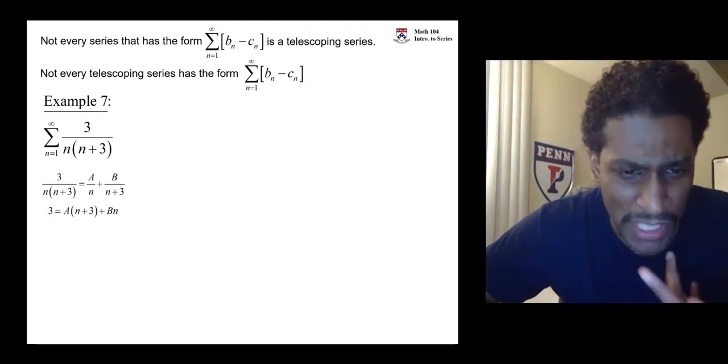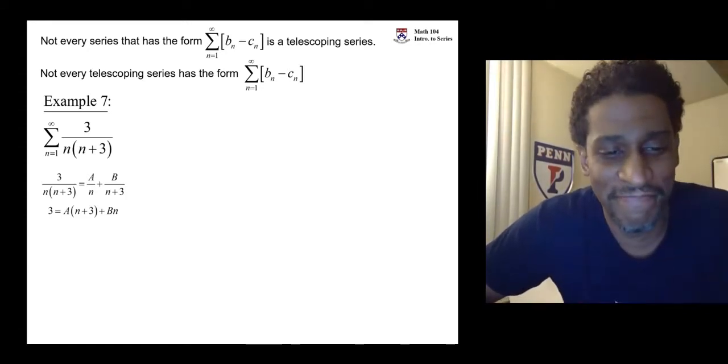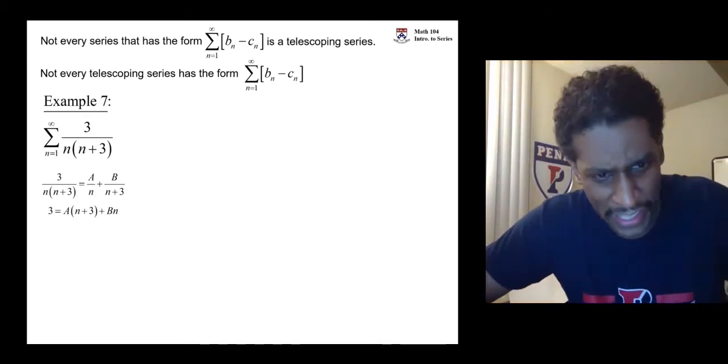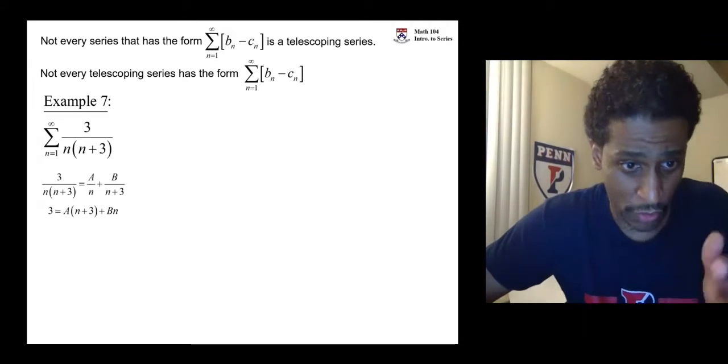a times n plus 3 and b times n. Add it together. It should give you the original numerator of 3. And there's a little shortcut or cover-up method that you can use. Let n equal the thing that would make those guys equal to 0. You can solve for one at a time.